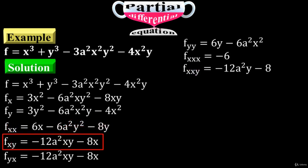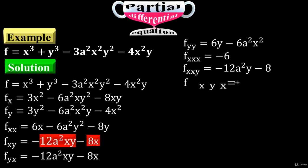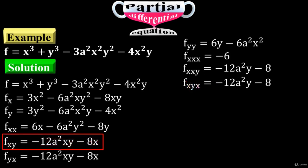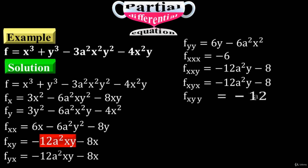Now take f sub xy and differentiate it first with respect to x. The variables x exist in both terms — just differentiate them with respect to x to have f sub xyx. Differentiation of f sub xy with respect to x is minus 12a squared times y minus 8. Then differentiate with respect to y to have f sub xyy. Differentiation of f sub xy with respect to y is minus 12a squared times x.